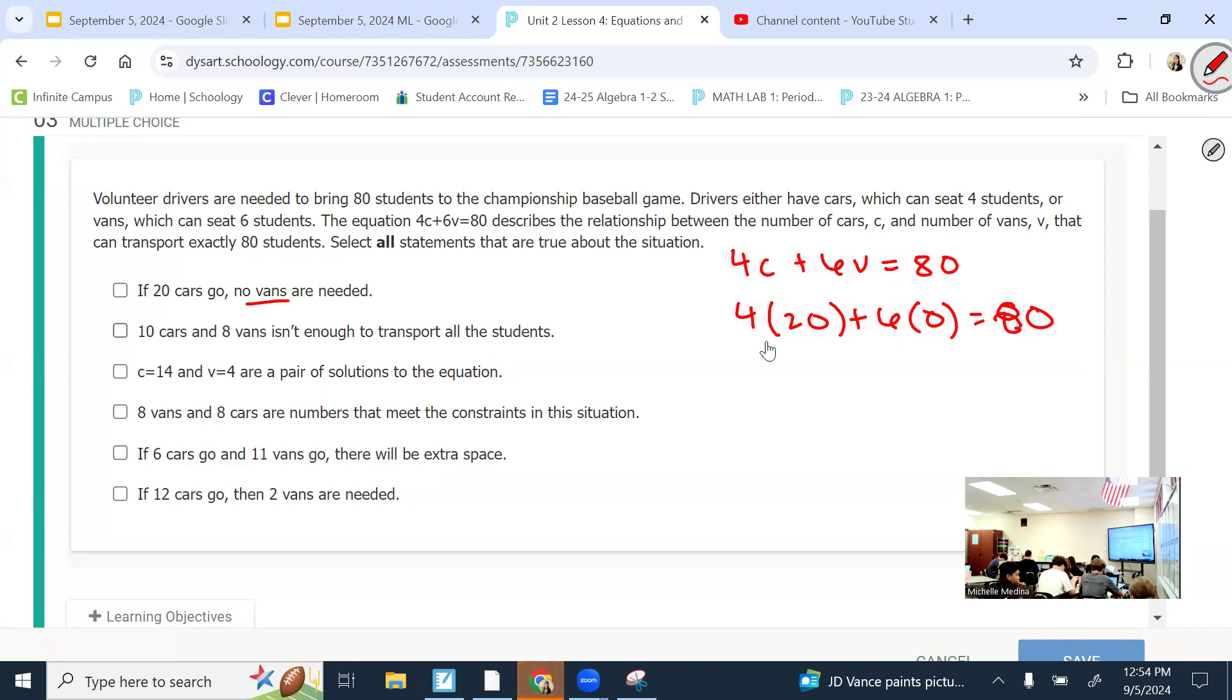First I have, if 20 cars go, no vans are needed. So, we're going to plug in the 20 for C. And it says, if 20 cars go, no vans are needed. So, that would be how many vans? Zero. What's 4 times 20? 80. What's 6 times 0? 0. Is 80 plus 0, 80? So, we can pick that one.